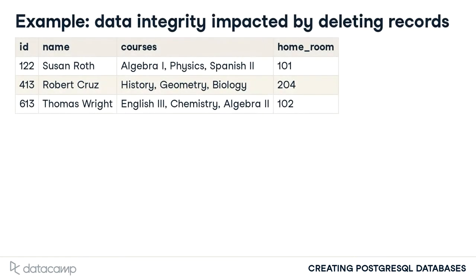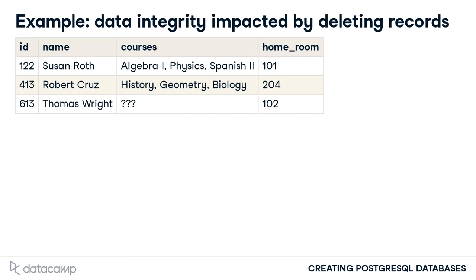If a student wants to drop a course, deleting a data value from the courses column could fail before the value of the column is updated. If Thomas tries to drop chemistry, the data value, which includes the remainder of his courses, must be altered. In the worst case, the failed deletion of the string chemistry could cause the record of his other courses to be lost.